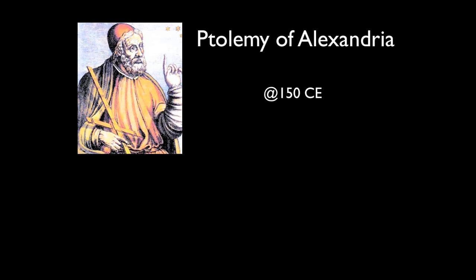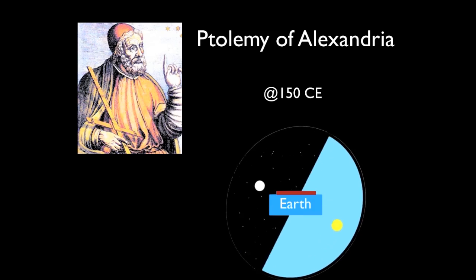Ptolemy of Alexandria, a mathematician, astronomer, and philosopher, published his version of geocentrism around 150 CE.